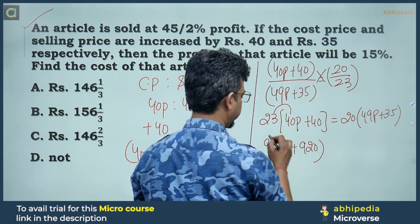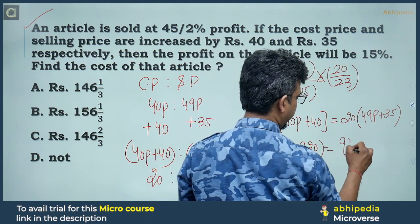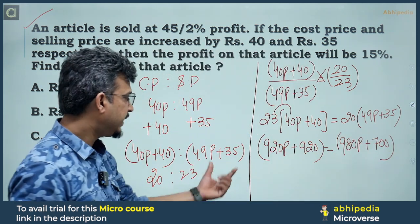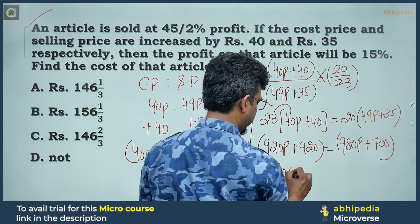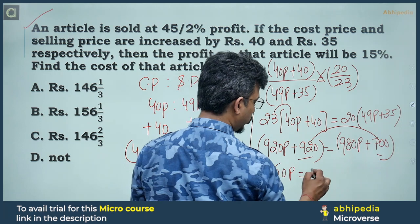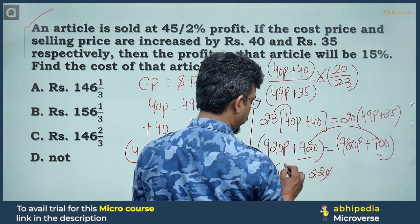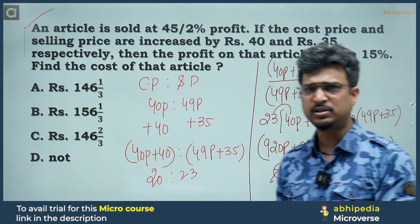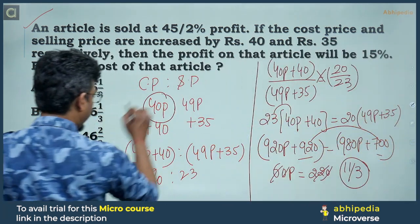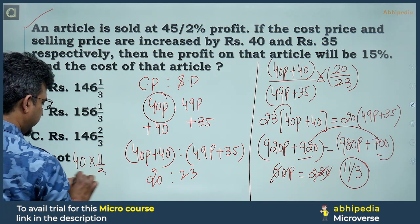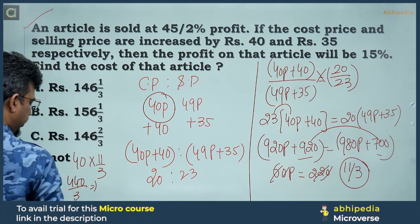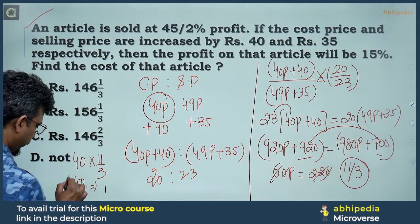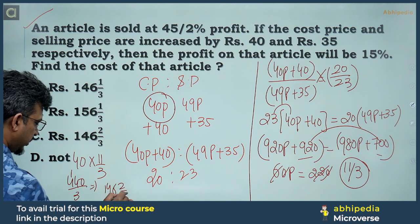Solving: 920p + 920 = 980p + 700. So 980p - 920p = 920 - 700, which gives 60p = 220. Therefore p = 220/60 = 11/3, and 40p = 440/3, which is approximately 146.67.